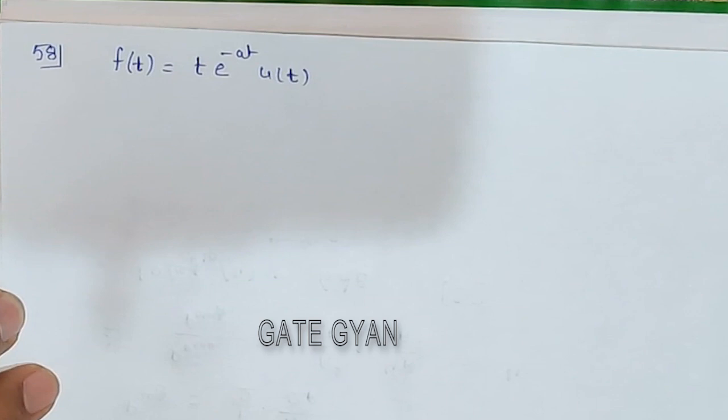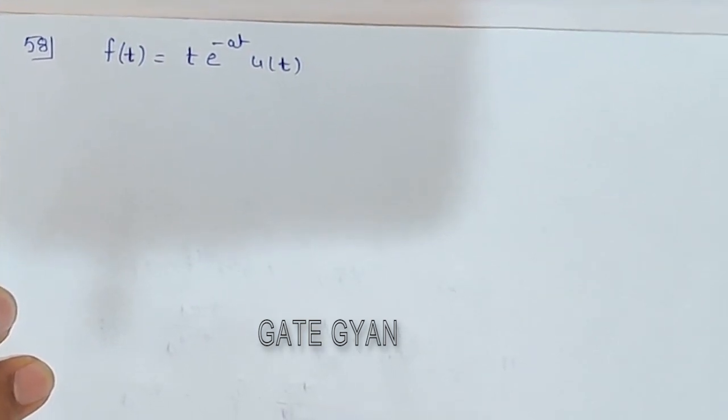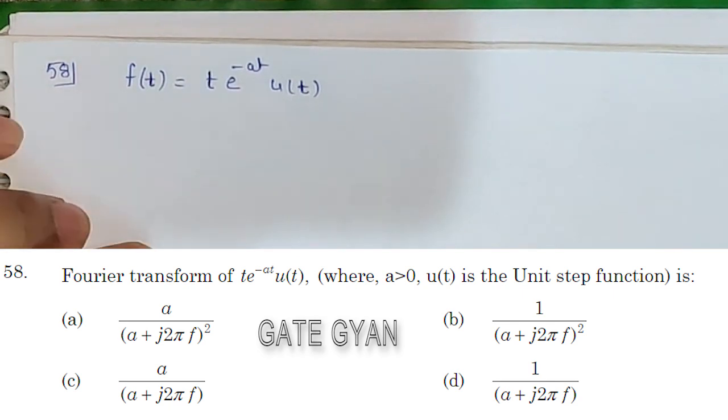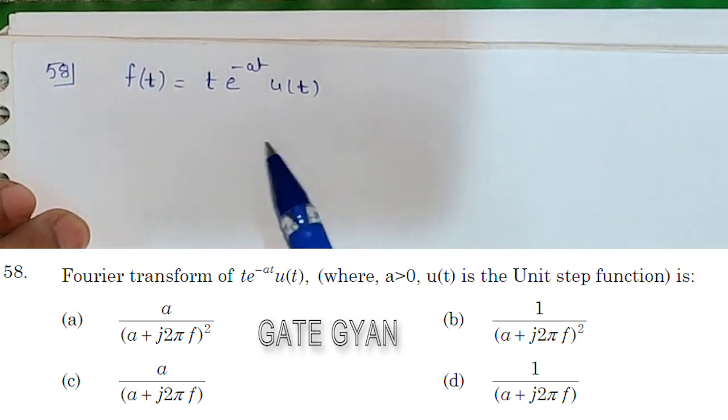Hello friends, welcome to GATE GYAN. We are going to discuss question number 58 from 2018. In this question, the signal f(t) is given as t·e^(-at)·u(t).